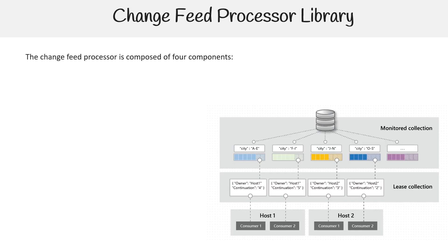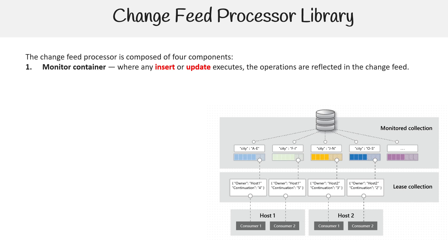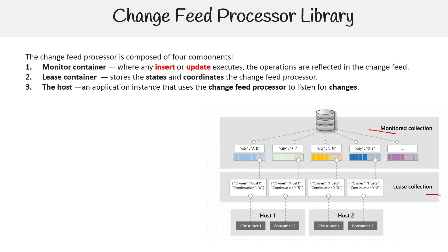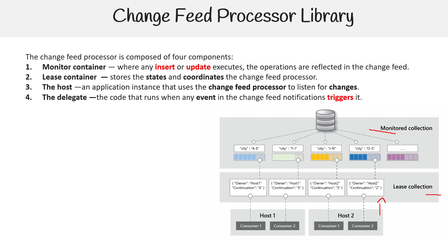In terms of its implementation, the change feed processor is composed of four components. First, the monitored container — this is where any insert or update executes; the operations are reflected in the change feed. Remember, a collection is a mapping to a container, so collection and container are being used interchangeably here. The lease container stores the state and coordinates the change feed processor. The host is an application instance that uses the change feed processor to listen for changes. And the delegate is the code that runs when an event in the change feed triggers it.